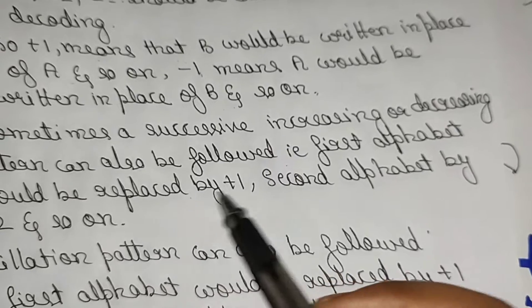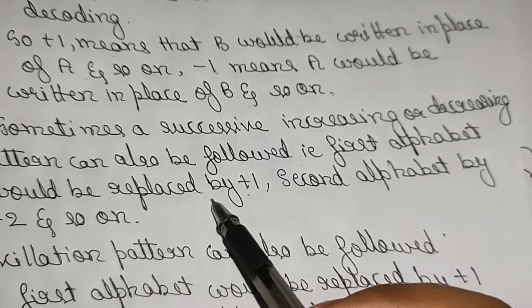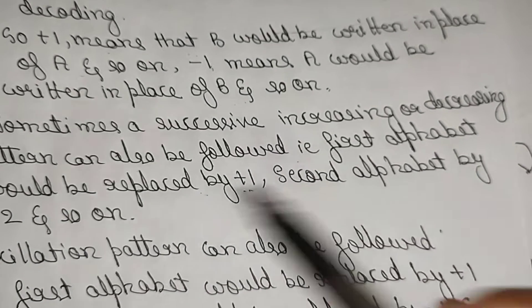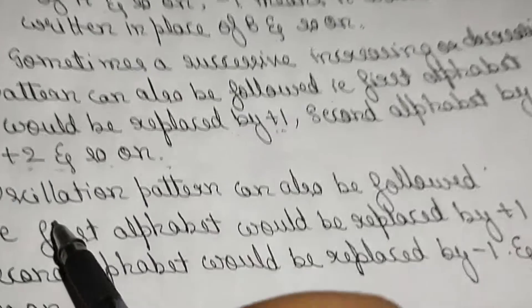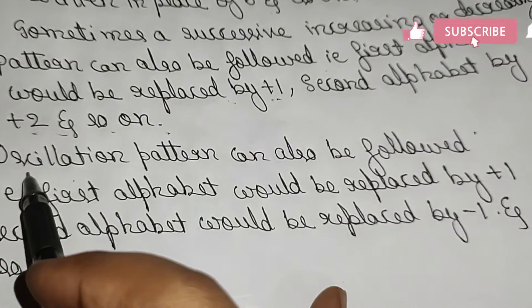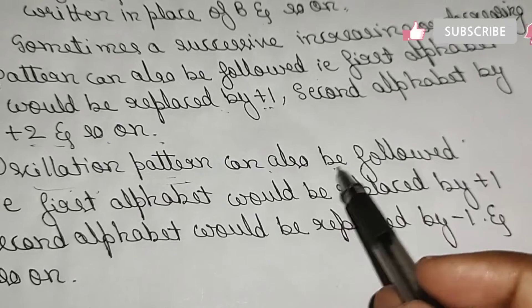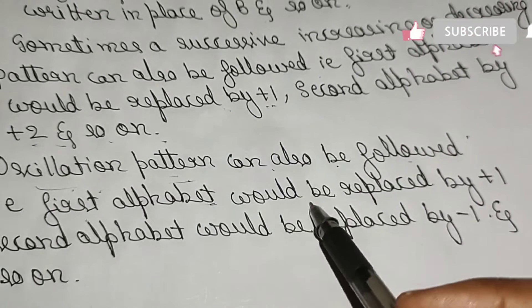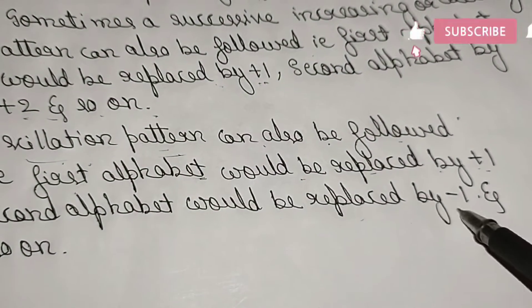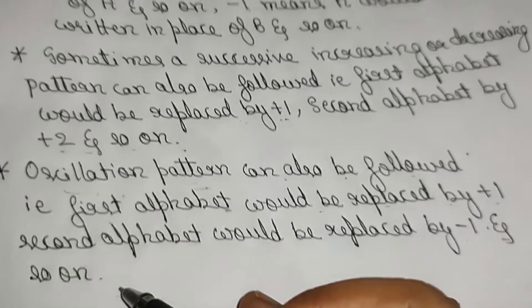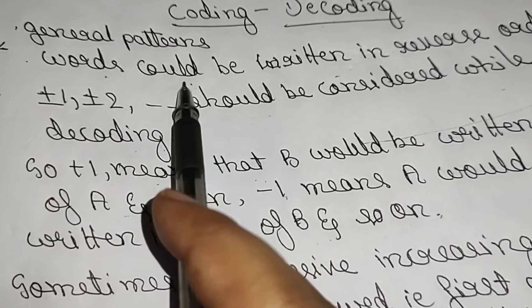Another pattern is successive increasing or decreasing — the first alphabet would be replaced by plus 1, second alphabet by plus 2, and so on. There is also an oscillation pattern, where the first alphabet is replaced by plus 1 and the second alphabet by minus 1, and so on. These are the general question patterns for coding and decoding.